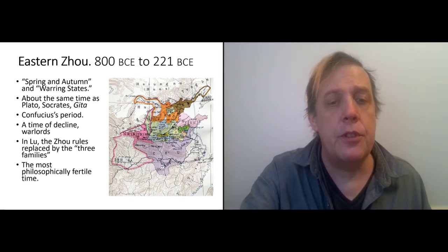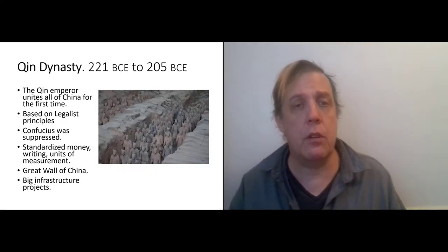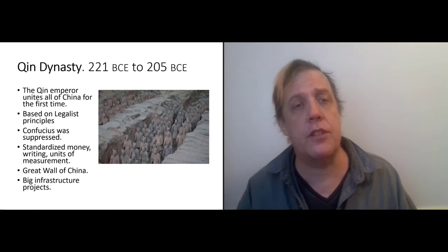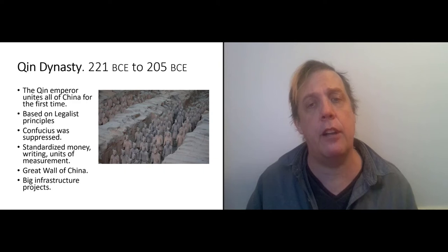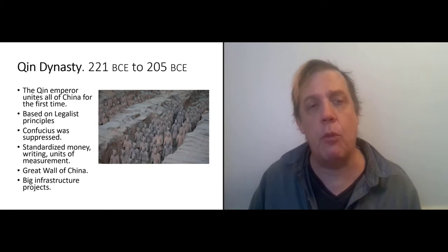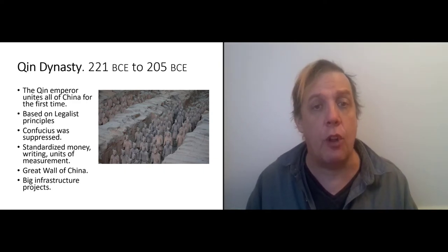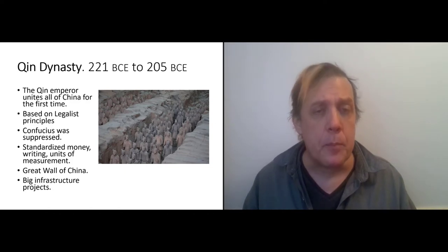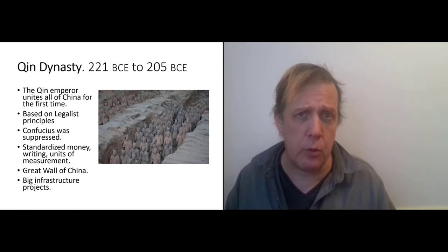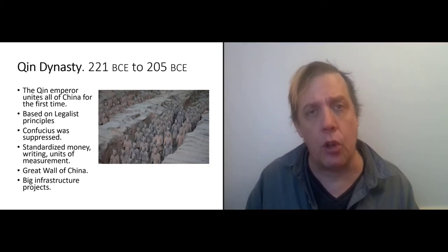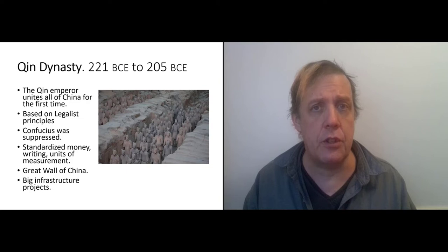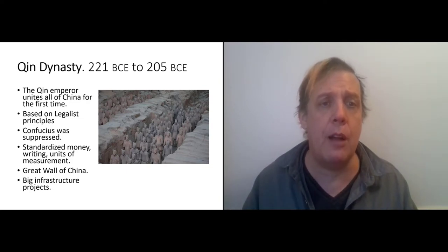So after Confucius's death, the period of chaos ends with the arrival of the Qin dynasty, and the Qin emperor is the first person to unify all of China for the first time. And so for that reason, he's often called the first emperor of China. His rule, however, was not based on Confucian ideas. He followed a school of philosophy called legalism, which is a useful philosophy to have when you're running a large empire.